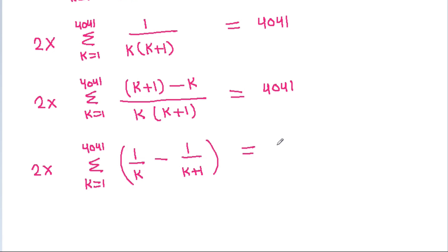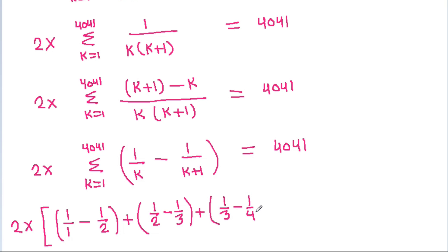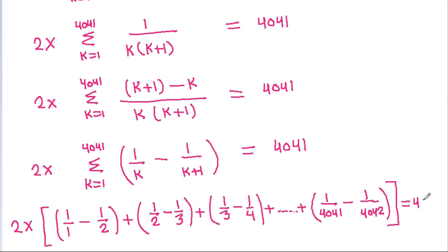Expanding the telescoping series: when k is 1 we get 1 by 1 minus 1 by 2; plus when k is 2 we get 1 by 2 minus 1 by 3; plus when k is 3 we get 1 by 3 minus 1 by 4; and so on, until when k is 4041 we get 1 by 4041 minus 1 by 4042. This equals 4041.